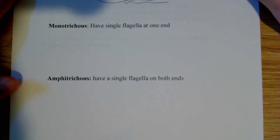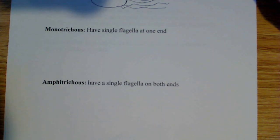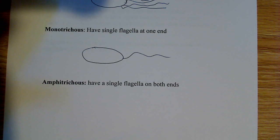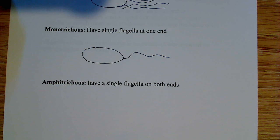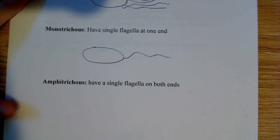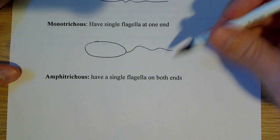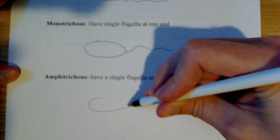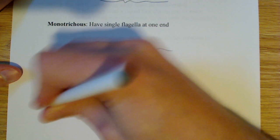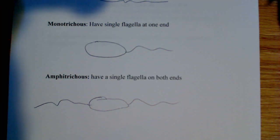Then there's monotrichous, which — if you think about it — the name just means that you have a cell with a single flagella on one side. So you have a single flagella at one end. That's monotrichous. Then you could have amphitrichous, which is almost the same as mono, only you have one flagella on both sides. You have a flagella here and a flagella over here. So you have one on both sides — that's known as amphitrichous.